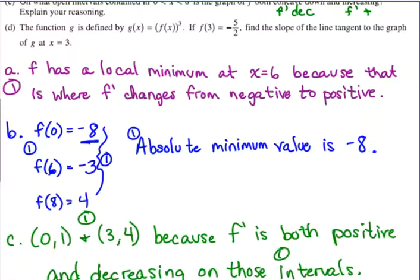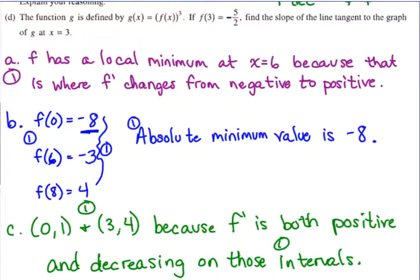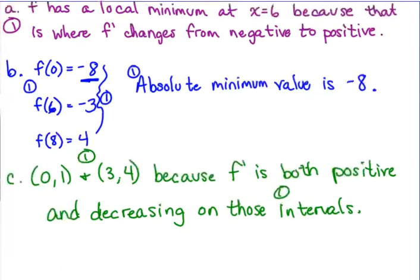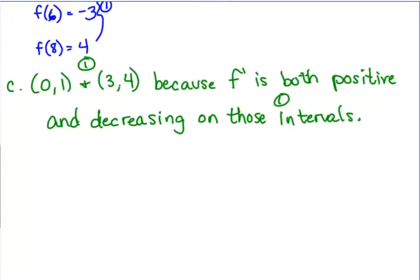Okay, let's look at D. Okay, the function g is defined by g of x is equal to f of x cubed. If f of 3 equals negative 5 over 2, find the slope of the tangent line to the graph of g at x equals 3. Okay, so slope of the tangent line to the graph. That's easy, right? Slope of the tangent line means derivative.